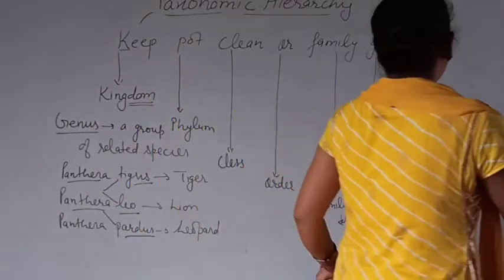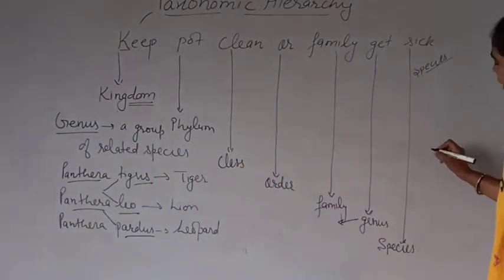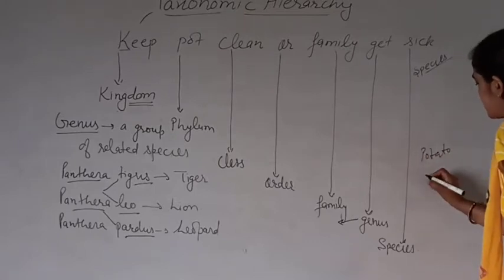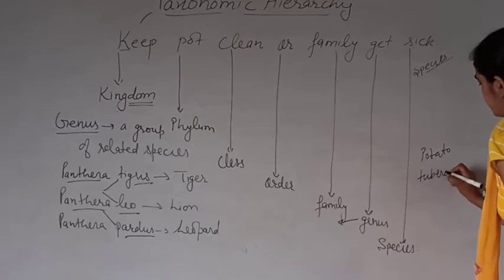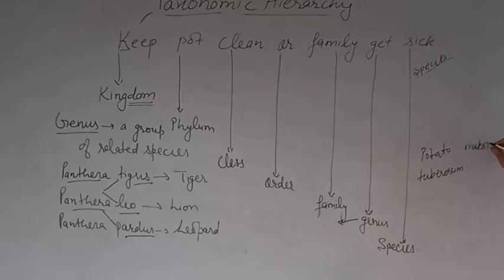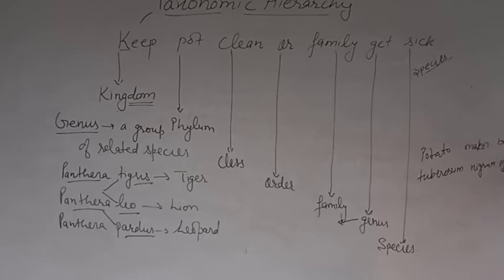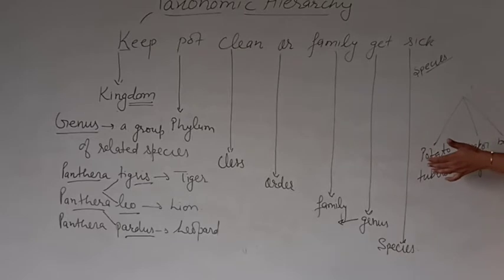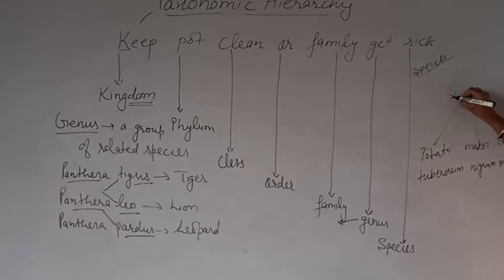Similarly, Solanum tuberosum (potato), Solanum nigrum (makoi), and Solanum melongena (brinjal) — these are three different species of plants, but they have common characteristics different from other genera, so all three are placed in the same genus: Solanum.